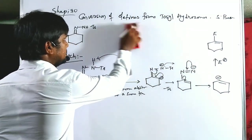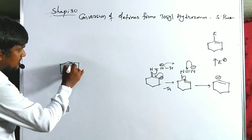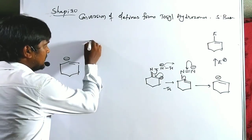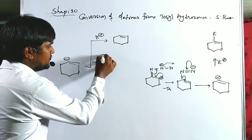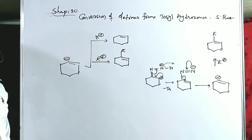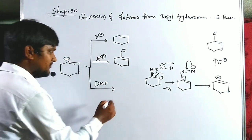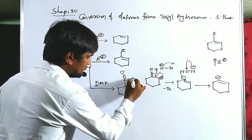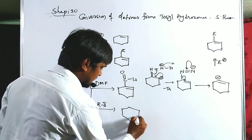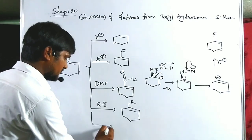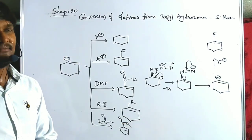The vinyl carbanion intermediate can react with various electrophiles. If we use H⁺ as the electrophile, we get a simple cyclohexene. Instead of H⁺, we can use any electrophile: DMF (dimethylformamide, which has an aldehyde group as electrophile), alkyl halides like methyl halide or ethyl halide, acyl groups, or acyl halides. This is the main mechanism involved in the Shapiro reaction.